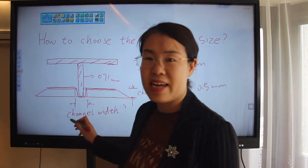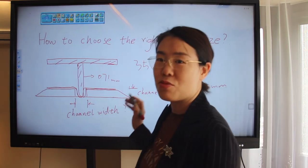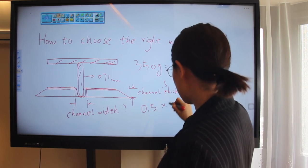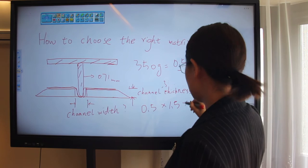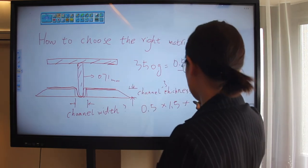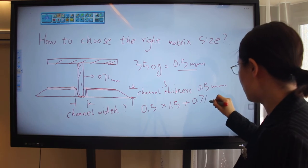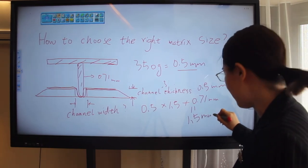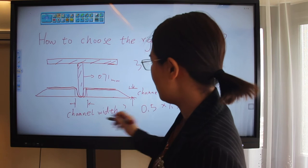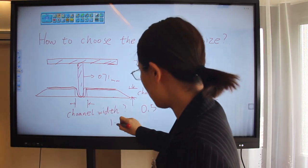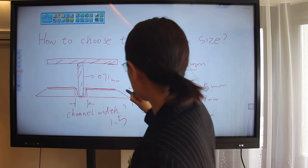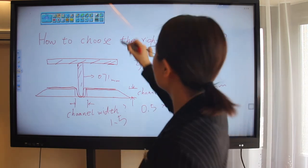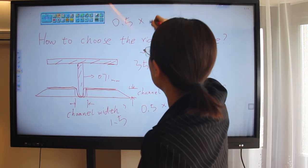So next comes to the channel width. Here we have a formula. That is the board thickness times 1.5 mm plus the steel thickness, so that is 0.71 mm, equals to 1.5 mm. So here we got the channel width 1.5 mm and the channel thickness 0.5 mm. So the right size is 0.5 mm by 1.5 mm.